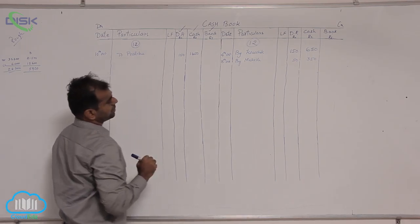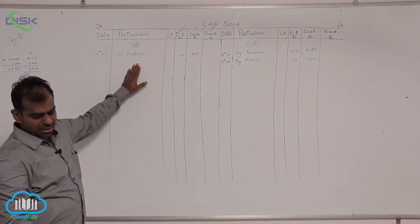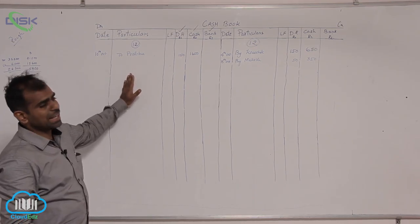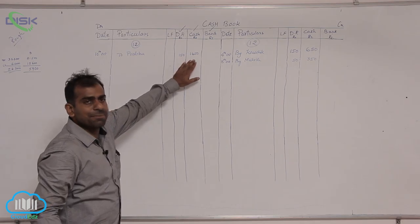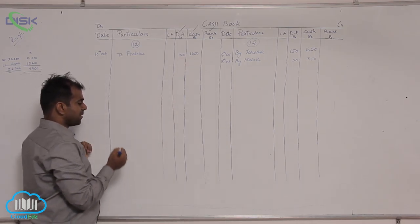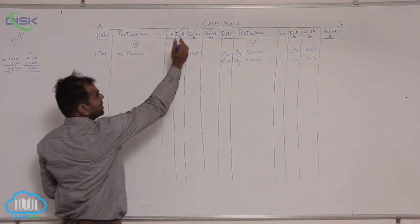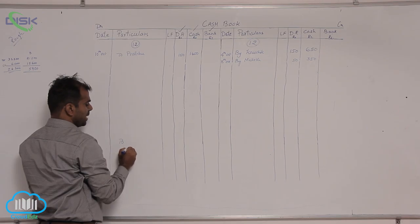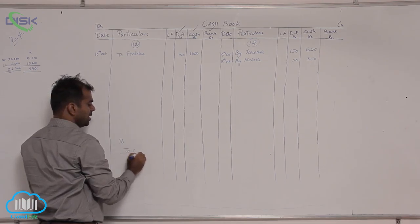Now, this check was deposited on 14th, so moving on to 14th I will be passing contra entry for this 1450. Being it is deposit of check which I should treat it as deposit of cash in this case, if you remember entry becomes bank to cash according to the journal entries what you learnt.